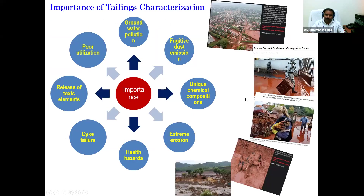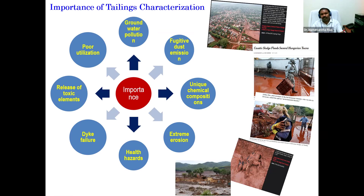Based on the literature, important characteristics that need to be focused on include the unique chemical composition of each tailings, physical dust emission, groundwater pollution due to leaching, poor utilization of tailings material, release of toxic elements, dike failure causing dam break, inherent seismic hazards, and extreme erosion. Many of these characteristics are new and not encountered with conventional soils. When dealing with tailings, multiple parameters must be addressed simultaneously.